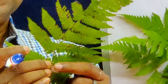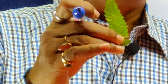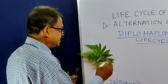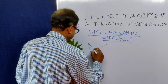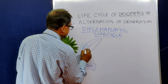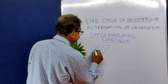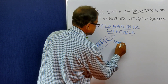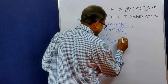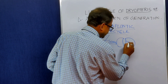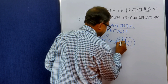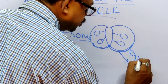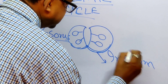Each pinna, if we take it out, we can find on the lower side dot-like structures called sori. If we draw the diagram of each pinna, we can find these sori structures. If we take the cross-section of a sorus, some sporangia are present. This sorus is covered by one membrane called the indusium.